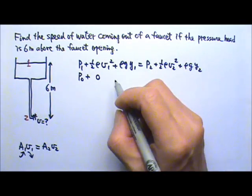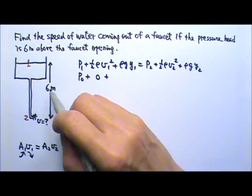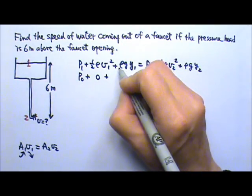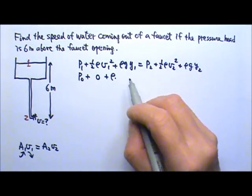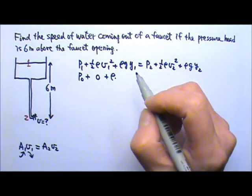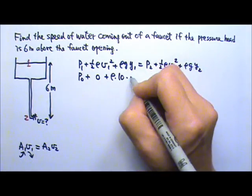So we are going to use 0 for the speed at 1. At 1, the height is 6 meters. So we need to put in the density. I am actually not going to put in the density because you can see later on that the density is going to cancel. And then the g is 10, the height is 6.